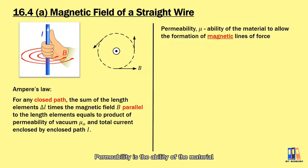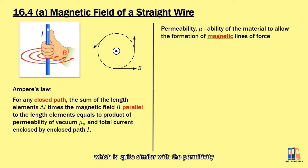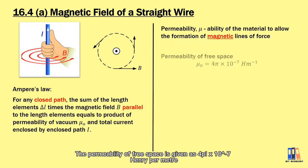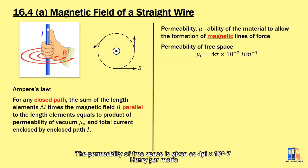Permeability is the ability of a material to allow the formation of magnetic lines of force, which is quite similar to permittivity that we learned in Chapter 13. The permeability of free space is given as 4π × 10⁻⁷.